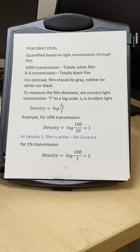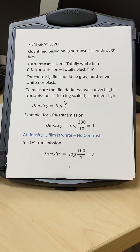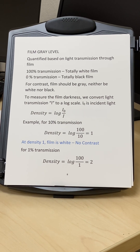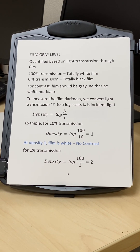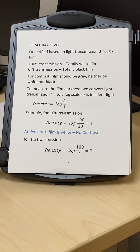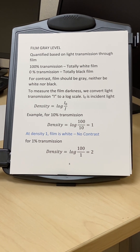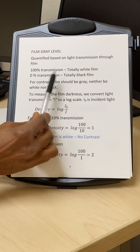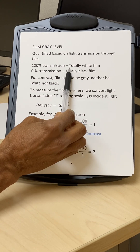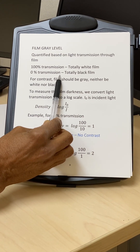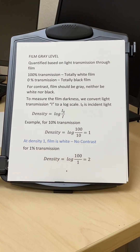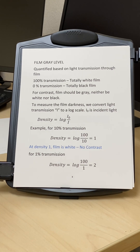The third parameter is film gray level. As an analogy, a black-and-white movie screen is neither white nor black — it is gray, which provides the best contrast. If there is 100% transmission through the film, it produces a totally white image. If there is 0% transmission, the film is totally black. We want neither extreme — we want something in between for good contrast.